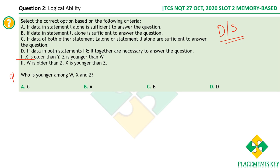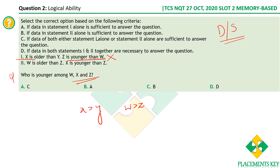From statement one: X is older than Y, and Z is younger than W (i.e., W is greater than Z). We only know X is greater than Y and W is greater than Z, but there's no relation between X and Z. There's no common term to compare all four terms, so statement one alone is insufficient.